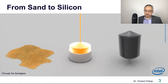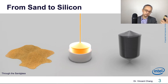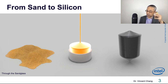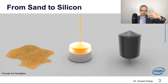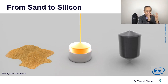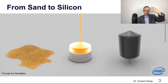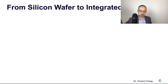We can start with the silicon — from sand to silicon. Thanks to Intel for coming up with this slogan: from sand to silicon. On the left side is the sand. In the middle is the semiconductor fabrication process. On the right is the silicon ingot — the pure silicon ingot. And from there, if you cut the ingot, it becomes a silicon wafer.